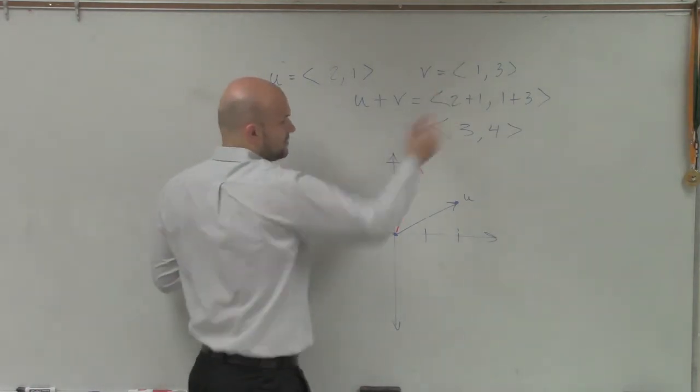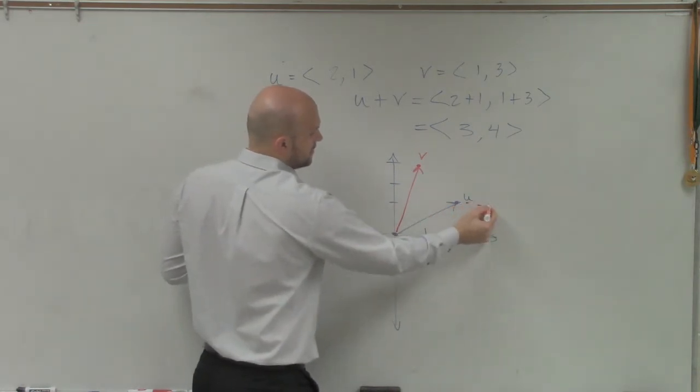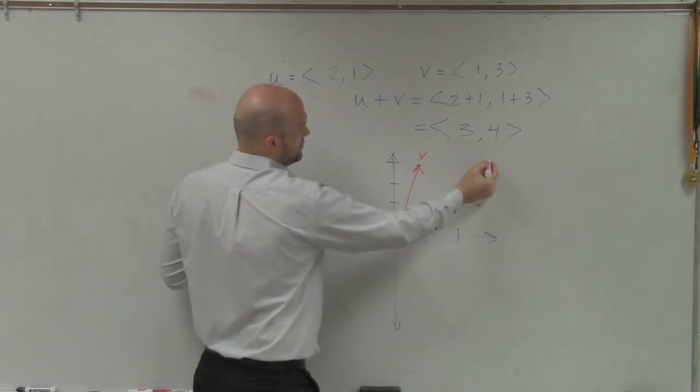Notice v is (1,3). So if I go using the head-to-tail method, I'll go over 1, and then up 3. 1, 2, 3.